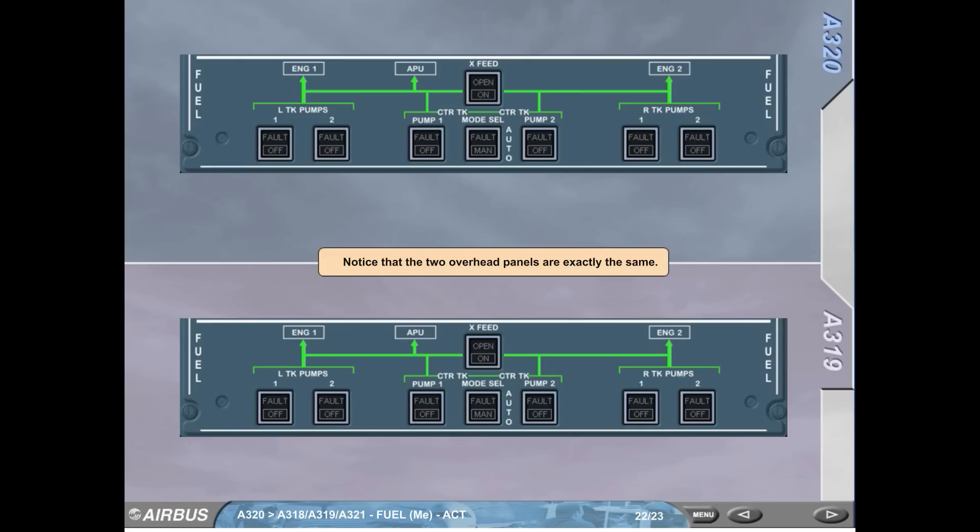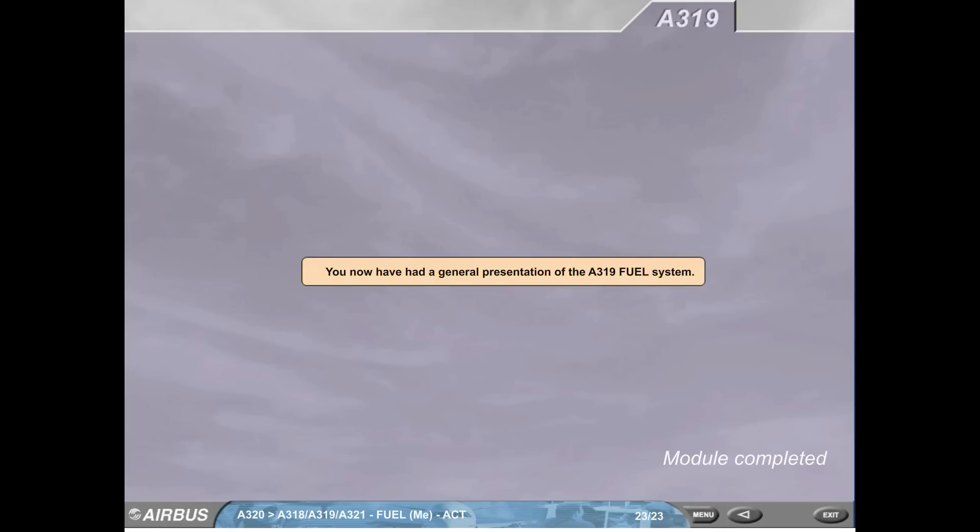Notice that the two overhead panels are exactly the same. You now have had a general presentation of the A319 fuel system.